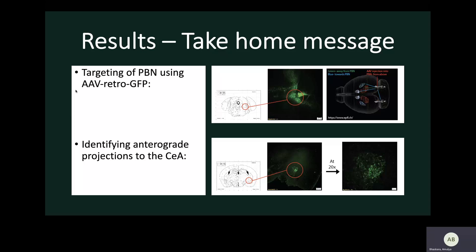So what did we see? The first image shows the targeting of the PBN, and in the 4X image we can see that there is a great deal of luminescence in the PBN, indicating the injection was in the right area and at the right concentration. On the far right you can also see the movement of the virus from and towards the PBN.